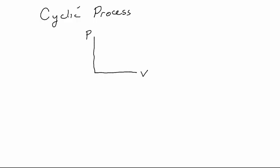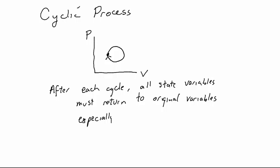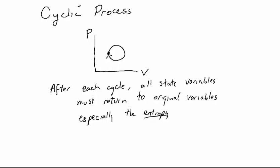A cyclic process is a process which returns to its starting point, and it may repeat over and over. After each cycle, all state variables must return to their original values — the pressure, volume, temperature, number of particles, internal energy, and especially the entropy.